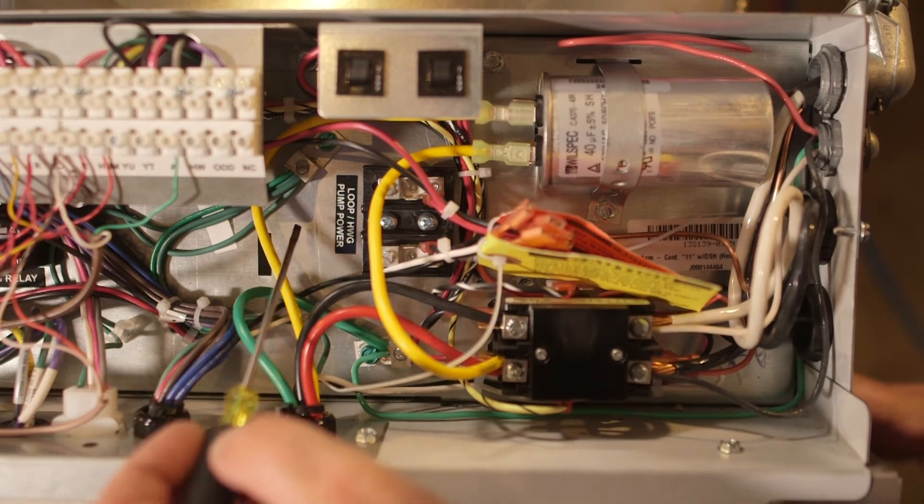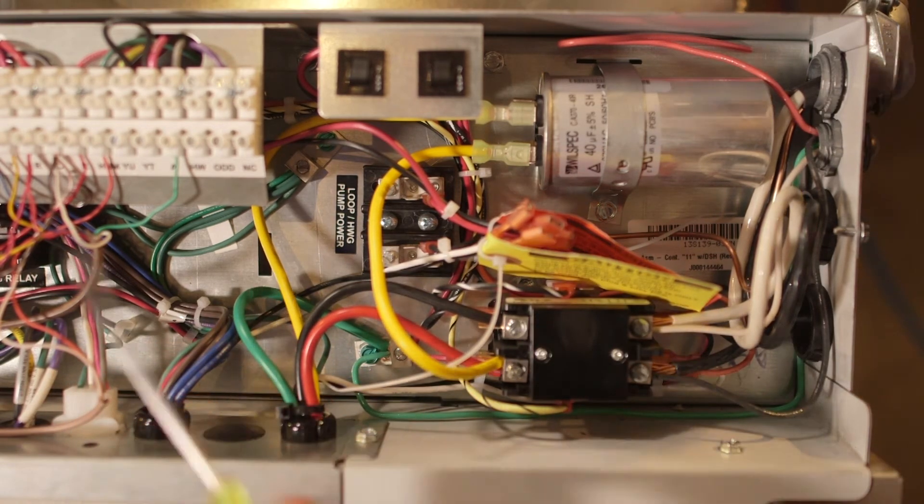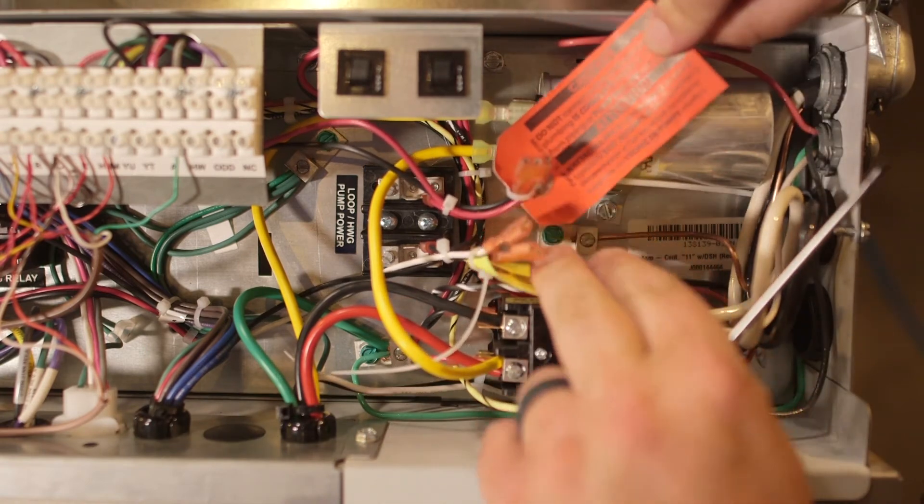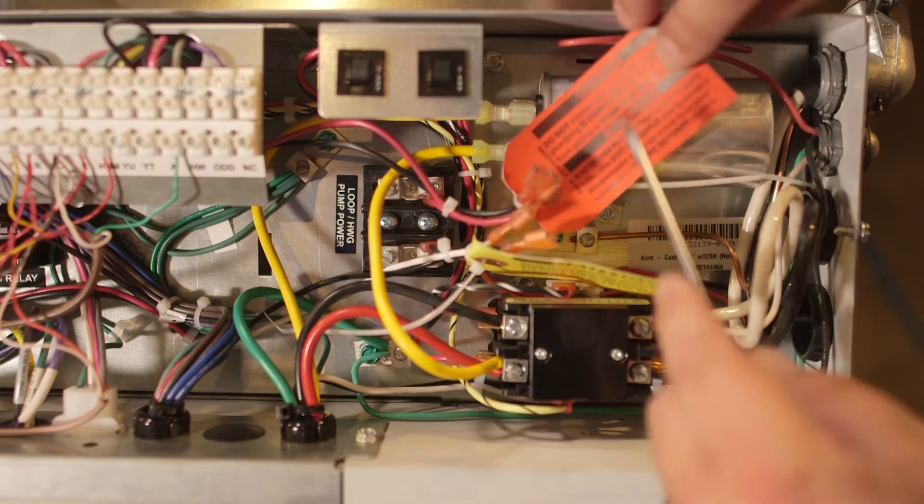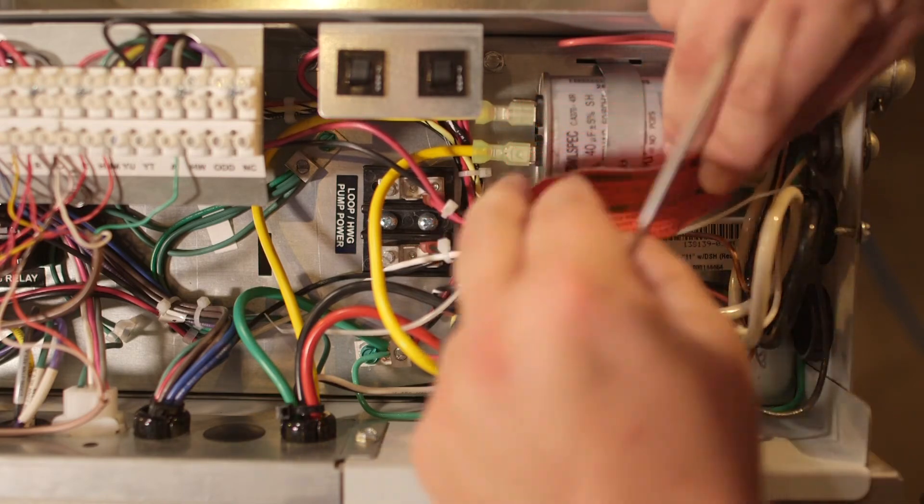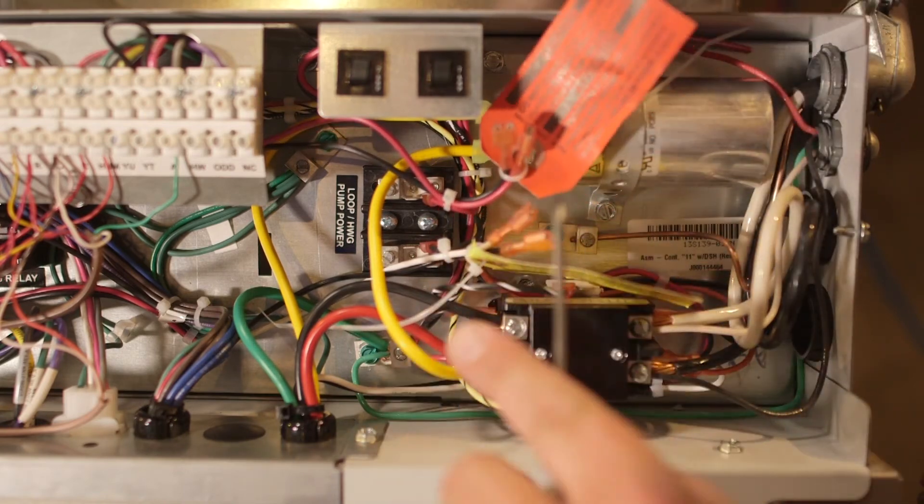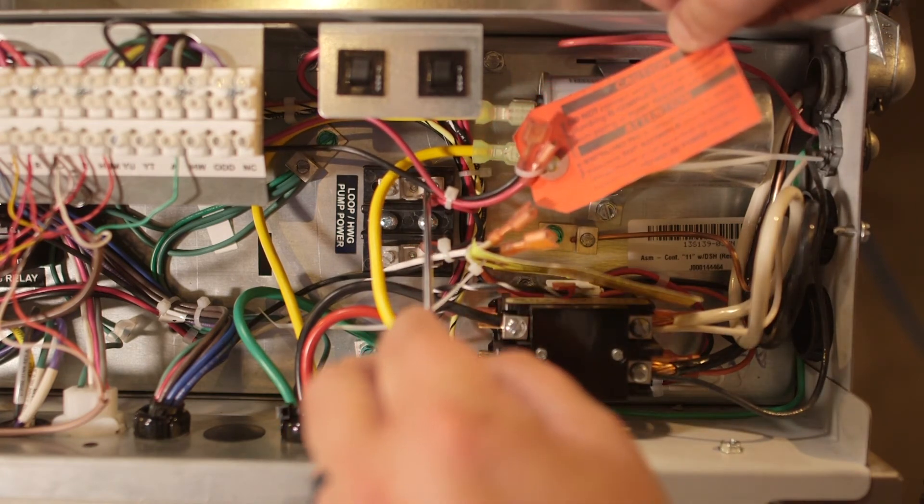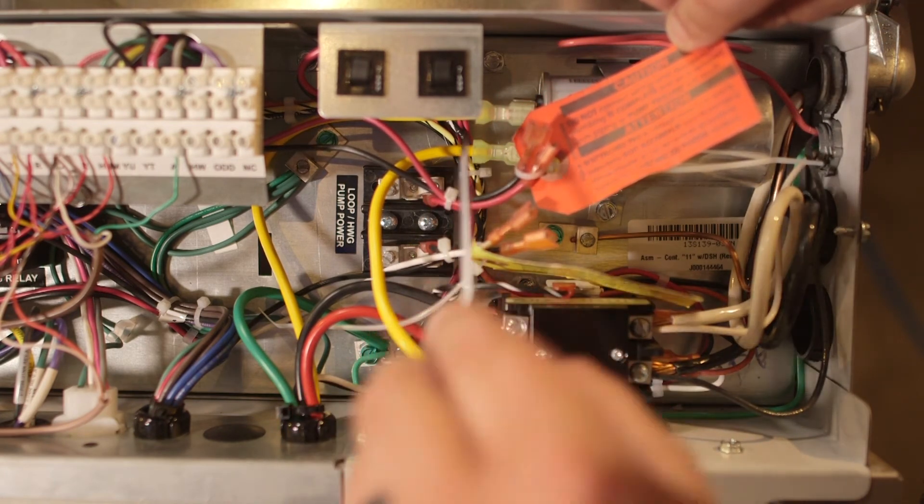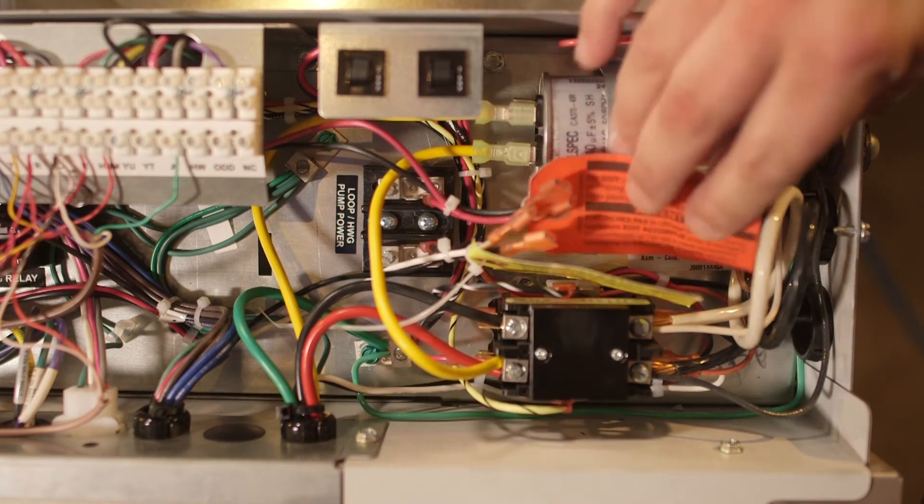This is also where you would hook up your desuperheater pump, which on the YT unit happens to be with the red tag. And it talks about do not hook this up until you have all your piping complete and it's full of water. But it has the two female spade connectors, and you would hook those right onto the male spade connectors on that pump relay.